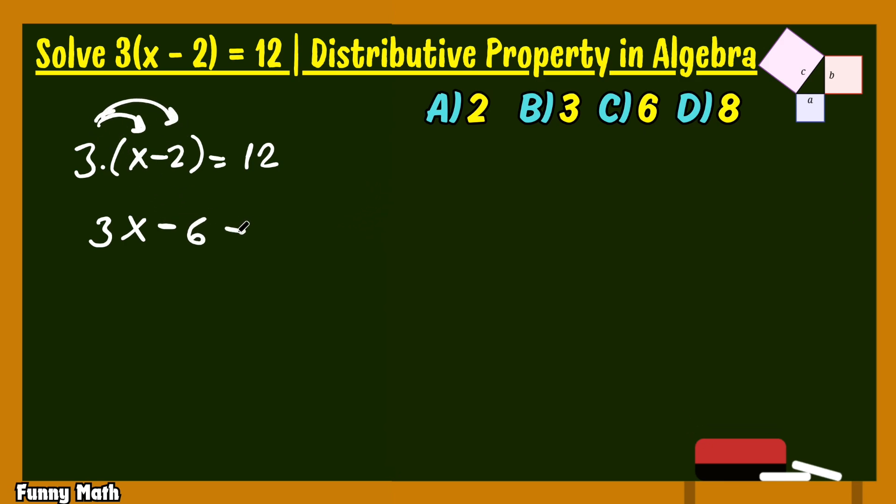3x minus 6 is equal to 12. Now we send the negative 6 to the other side as plus 6.